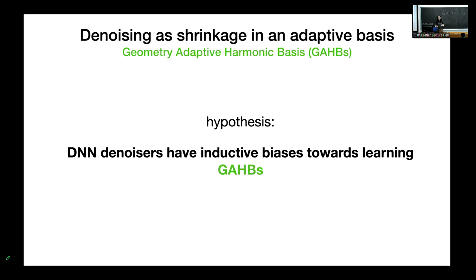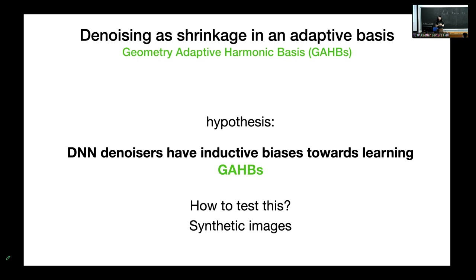From this observation, we form a hypothesis: deep neural network denoisers have inductive biases towards learning GAP — this geometry-adaptive harmonic basis. To test this hypothesis, for natural images we don't know the optimal denoiser, so we resort to synthetic images where we know the optimal solution. We look at two classes: one where GAP is the optimal basis, and another where GAP is suboptimal. We'll see empirically that the denoiser always ends up with GAP — that's what we mean by inductive bias.